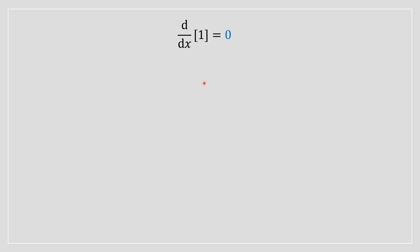As a matter of fact, why is any constant, the derivative of any constant, equal to 0? Let me prove it to you lot.